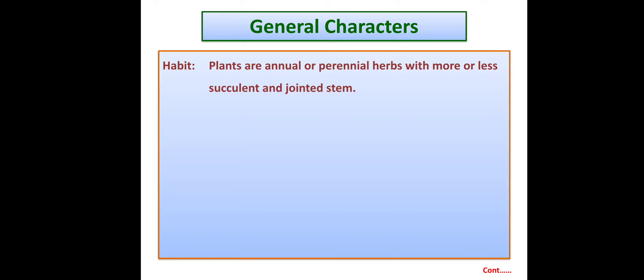Now let us go through the general characters. Habit: these plants are annual or perennial herbs with a more or less succulent and jointed stem. Most plants are annual, while some are perennial. Their major character is that they are herbs — not shrubby or trees. The succulent jointed stem is a main character of the habit.